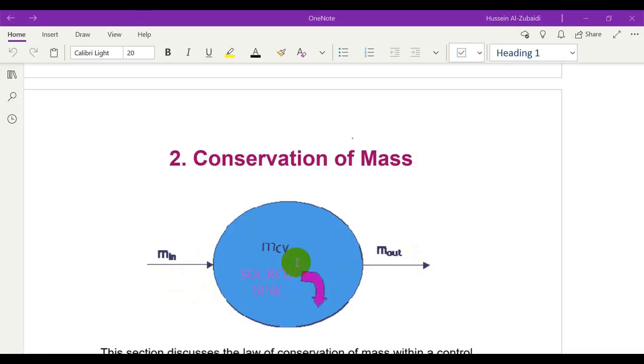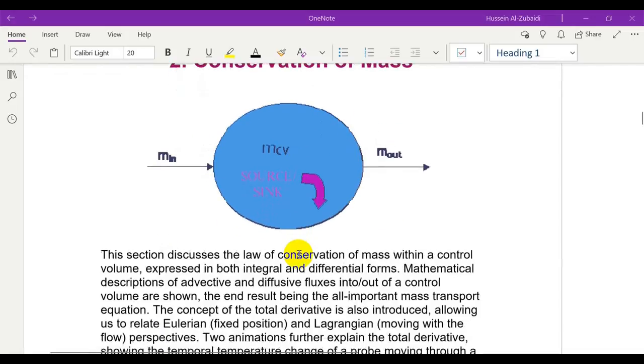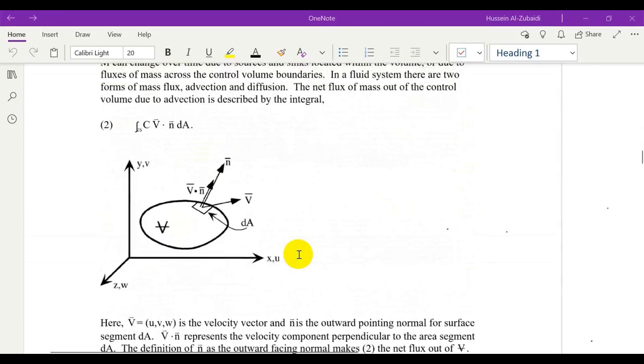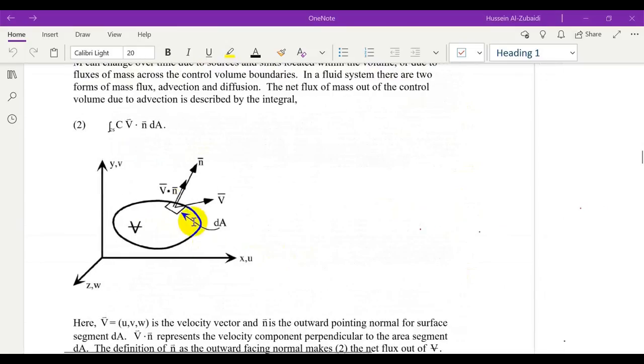The control volume is an ideal volume, fixed. We use it to study the accumulation of mass within it. Let's assume we have a control volume like this one.